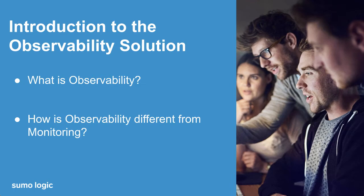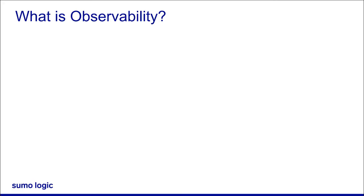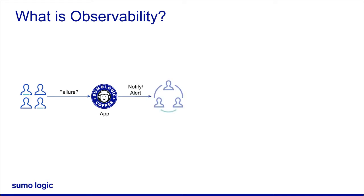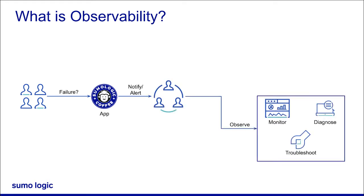Observability is the ability to understand the state of a production application. For example, let's consider a coffee app that provides a coffee ordering service across the globe. With observability, you can observe this app from the outside to understand what's happening inside it. Observability helps ensure that the app is running reliably, functioning as expected, is secure, and that your production resources are being used and accessed as intended.